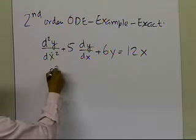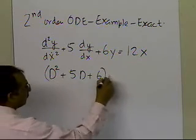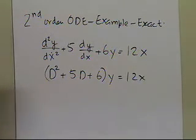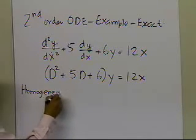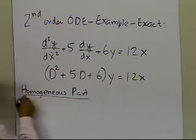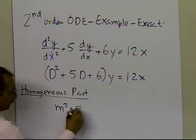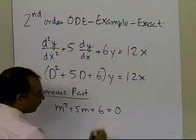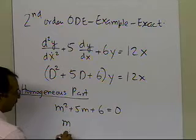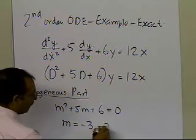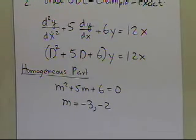What we're going to do is write it down in operator form, because this allows us to develop the characteristic equation for the homogeneous part. So the characteristic equation will look like this: m squared plus 5m plus 6 equals 0. Using quadratic factoring, I get the values of m to be minus 3 and minus 2 — those are the two roots of that equation.